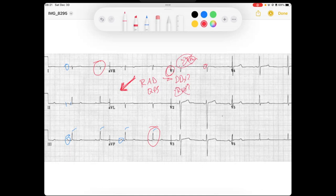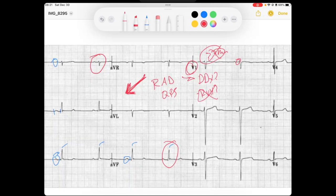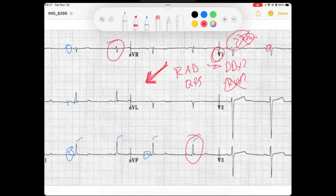Let's maybe look at fascicular blocks. And so when I look at lead 1, I see I've got these small R waves, which represents the depolarization that is being caused by our left anterior fascicle, which is healthy in this case. So we said that that creates small lateral R waves in 1 and AVL.